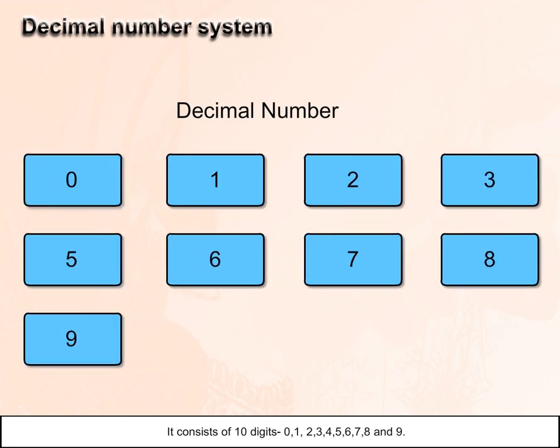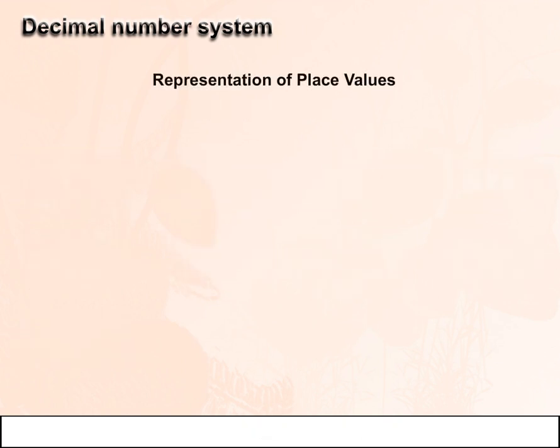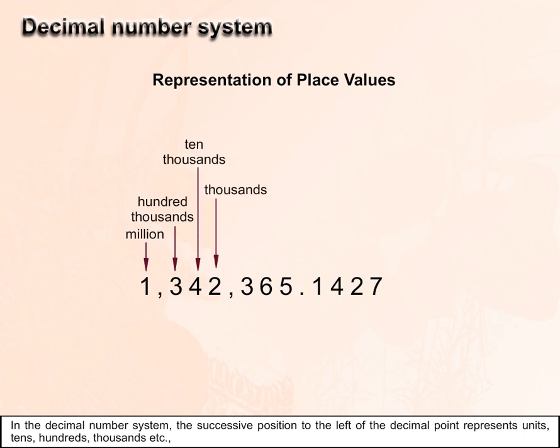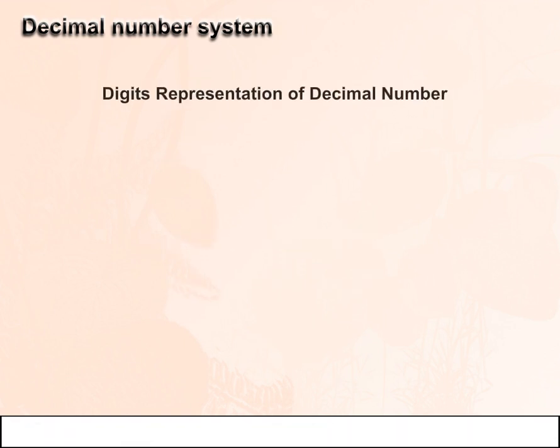3, 4, 5, 6, 7, 8, and 9. Representation of place values: In the decimal number system, the successive positions to the left of the decimal point represent units, tens, hundreds, thousands, etc.